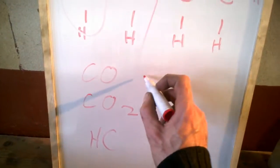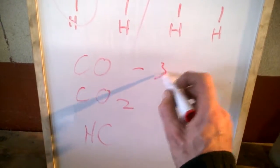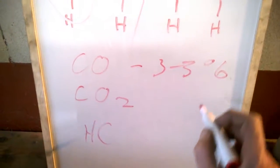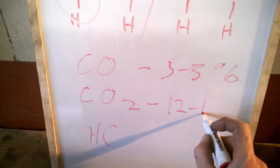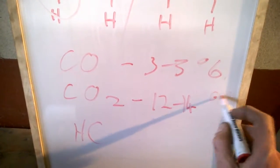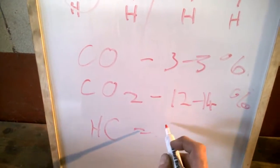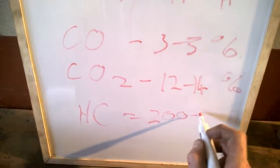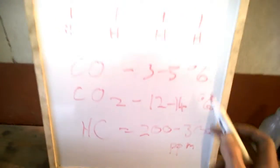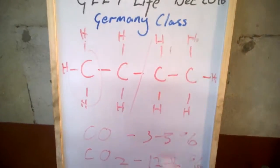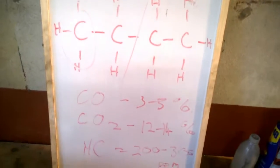Now, you burn more or less, so you get sort of like three to five percent carbon monoxide. You get sort of like 12 to 14 percent carbon dioxide. And you get on a generator like this, you get two to 300 parts per million random bits of hydrocarbon chain.